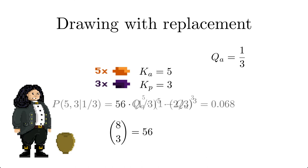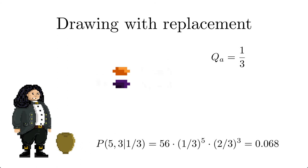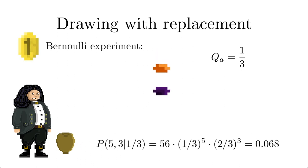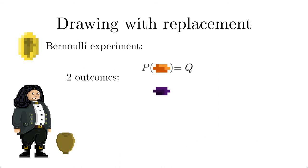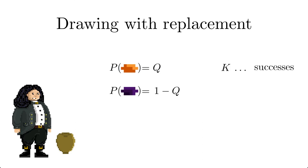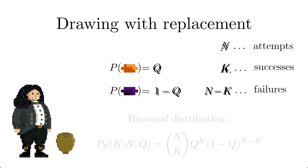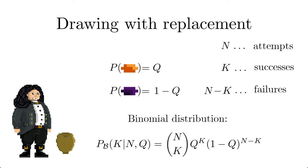And obtain a probability of 6.8%. The experiment just discussed is called a Bernoulli experiment which has two outcomes, one with probability q and the complementary one with 1-q. The probability to obtain k times the first outcome in n attempts is given by the binomial distribution which we mentioned in the last session.